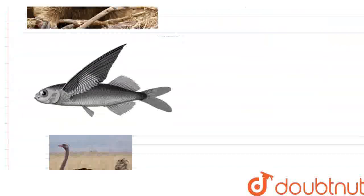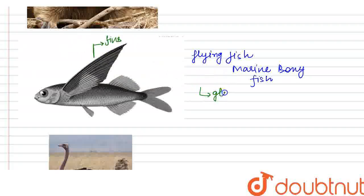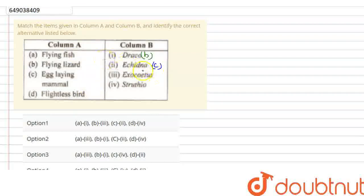Next, Exocetus. Exocetus is a type of fish called flying fish. It is a marine bony fish. They cannot actually fly, but they have fins that help them glide very quickly. These fins allow them to leap very far and glide through the water. This is called flying fish, which is our Exocetus.